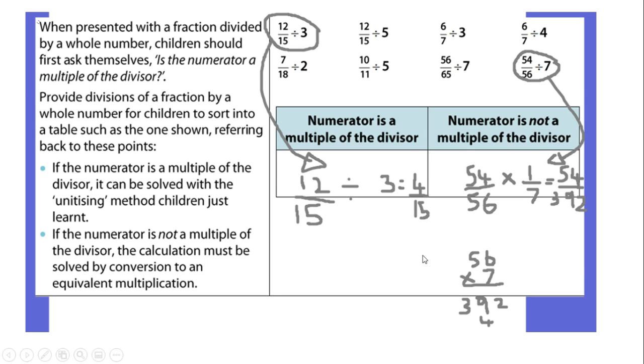So I did 54 over 56 multiplied by 1/7. Okay and I did 54 times 1 is 54, easy, and then 56 times 7, I just wanted to make sure I was getting it right so I just did a little workings down here. So my answer is 54 over 392 and I know that can be simplified so maybe someone can send me a solution afterwards to show you what the simplified answer would be.